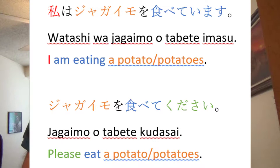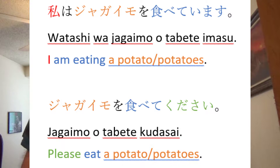For ru-verbs, you just take off the ru and add te. Let's take our eat-potato sentence. You can change it to watashi wa jagaimo wo tabete imasu, which means I'm eating potatoes, as in it is currently happening. You can also replace imasu with kudasai to make requests. The sentence jagaimo wo tabete kudasai means please eat a potato.